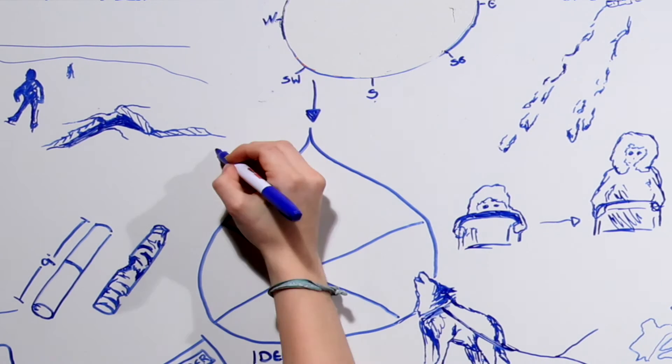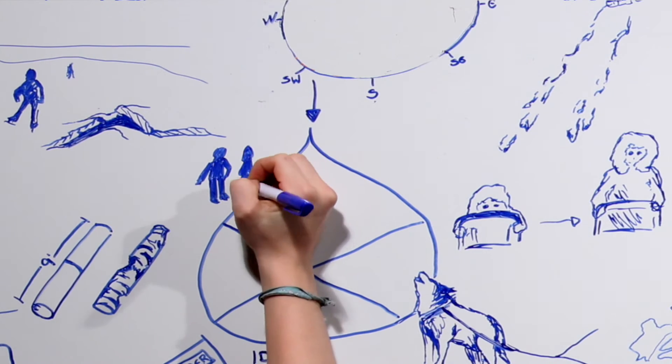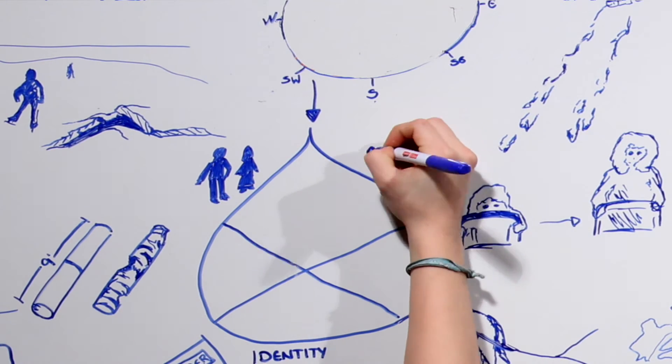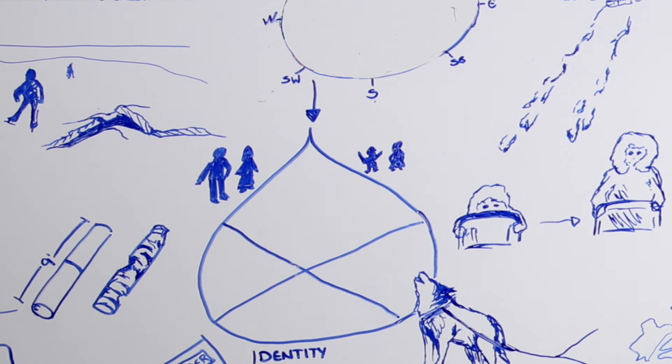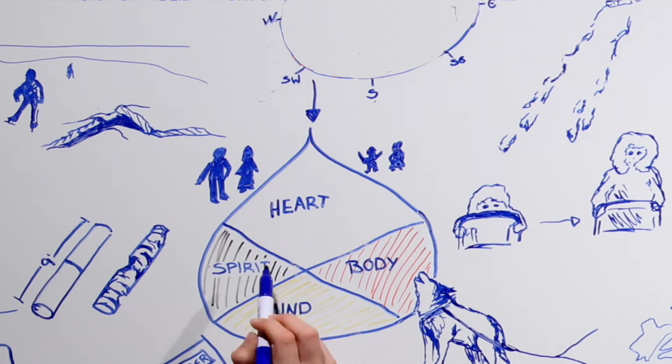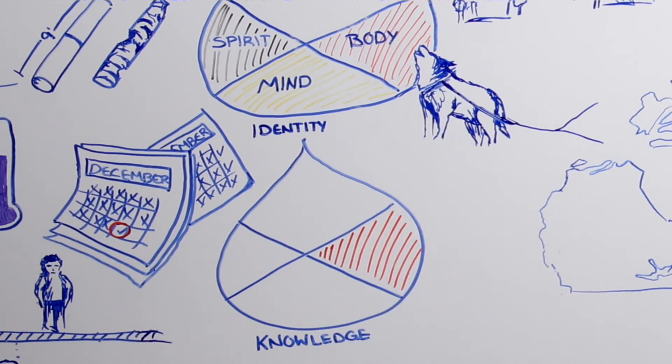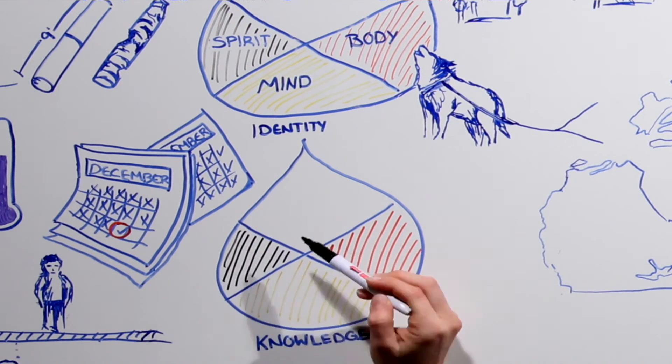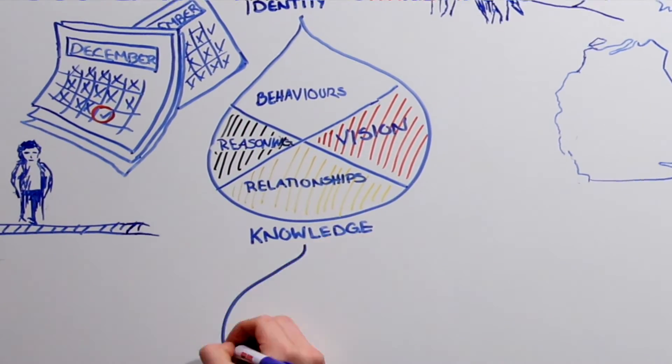We as people are made up of four parts. Our hearts, bodies, minds and spirits. Together they make up our identities. Our experiences as individuals build our values. Like growing up on the trap line and knowing how each plant, animal, bird and insect are connected. Together with others, individuals become nations with indigenous knowledge systems. Made up of behaviors learned from each other over time. Relationships that share values and overcome struggles together. A way of reasoning and a vision for the future.